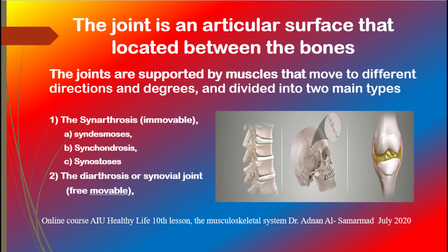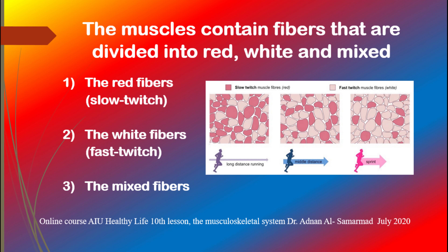The second main joint is the diarthrosis or synovial joint, such as the knee, hips, shoulders, elbows, neck, and head. The hands have a joint called the real joint, so that the bones involved have a cartilage as protection and also have joint lubrication like synovia, which is encased by a joint capsule.